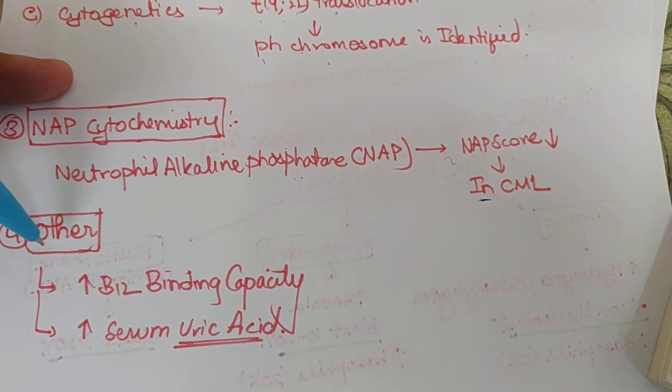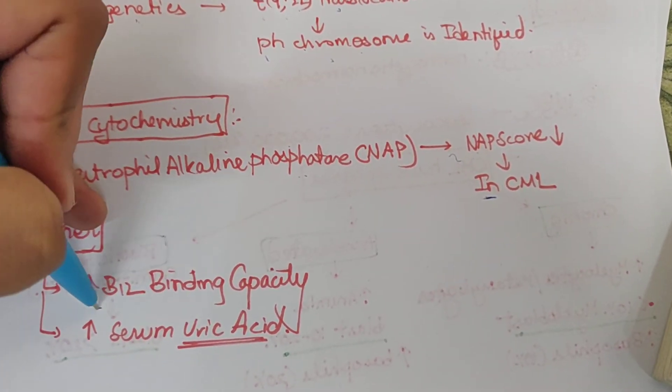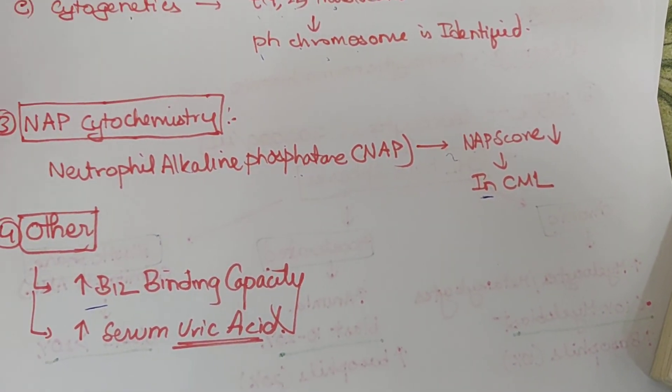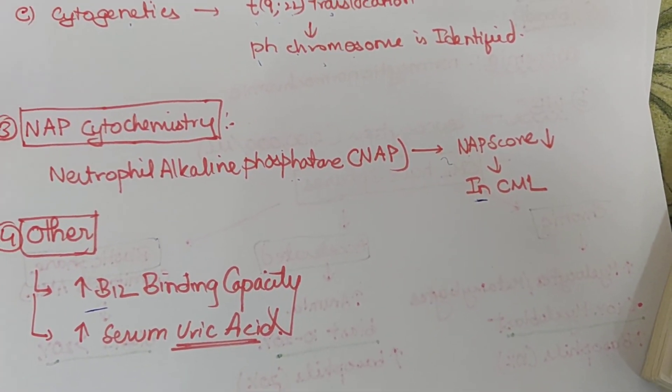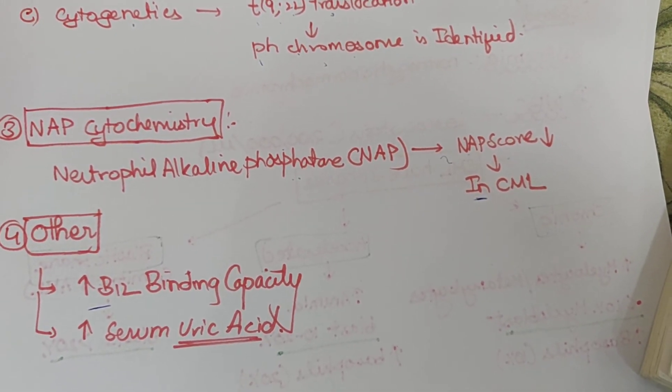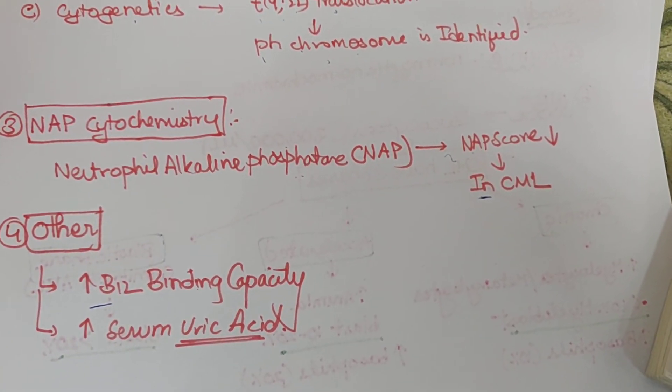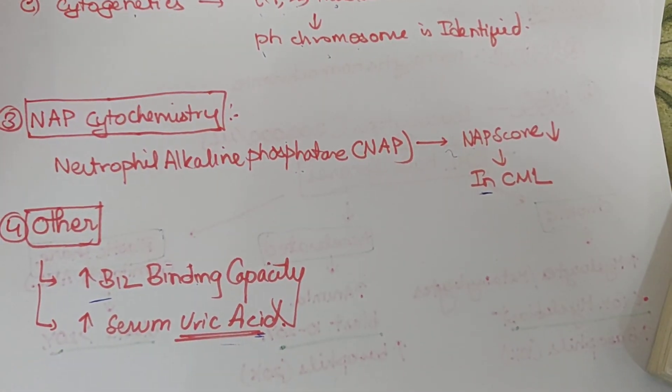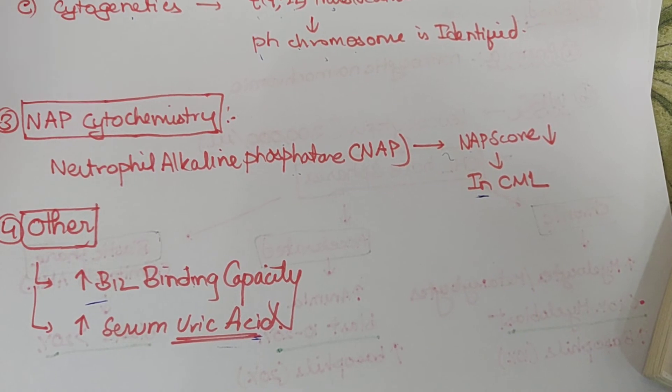Other tests show increased B12 binding capacity because we see anemia, so there is increased requirement of B12 and increased binding capacity. There is also increased serum uric acid level.